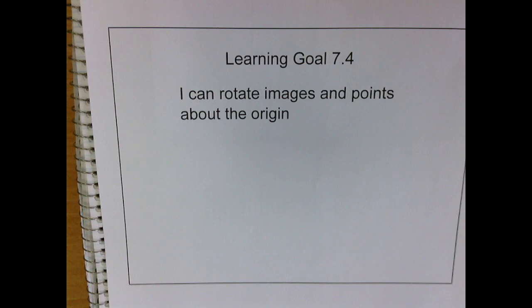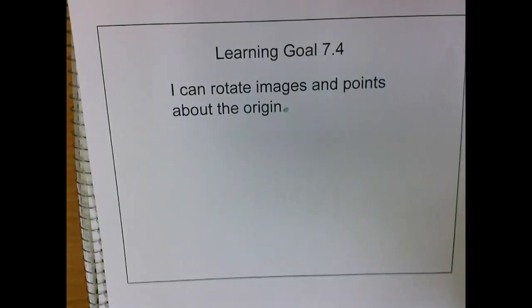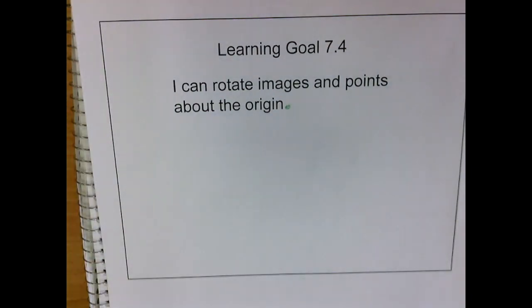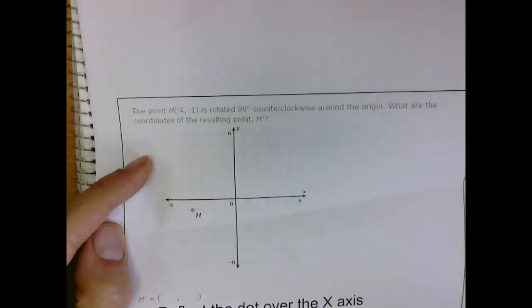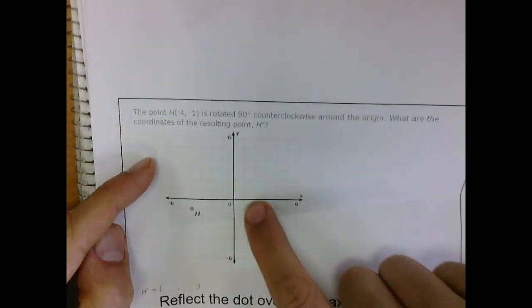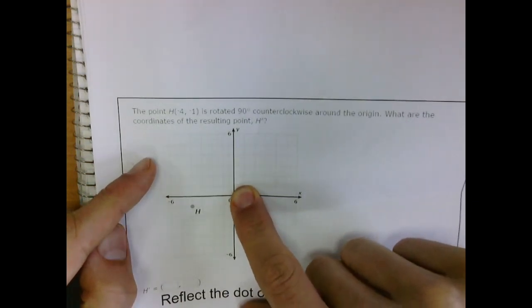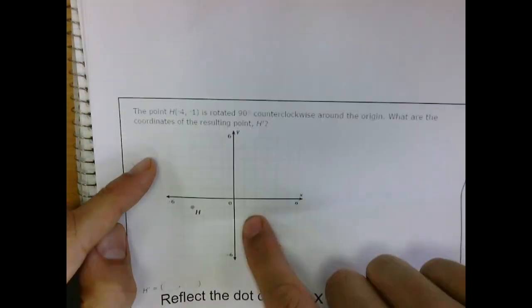Today's lesson is lesson 7.4 and the learning goal is I can rotate images and points about the origin. So today we're going to be looking at rotating points such as this one here and we're going to go 90, 180 degrees. We're going to move them about the origin. The origin is the middle, remember? That's the starting point. So we're going to move around clockwise, clockwise and counterclockwise.